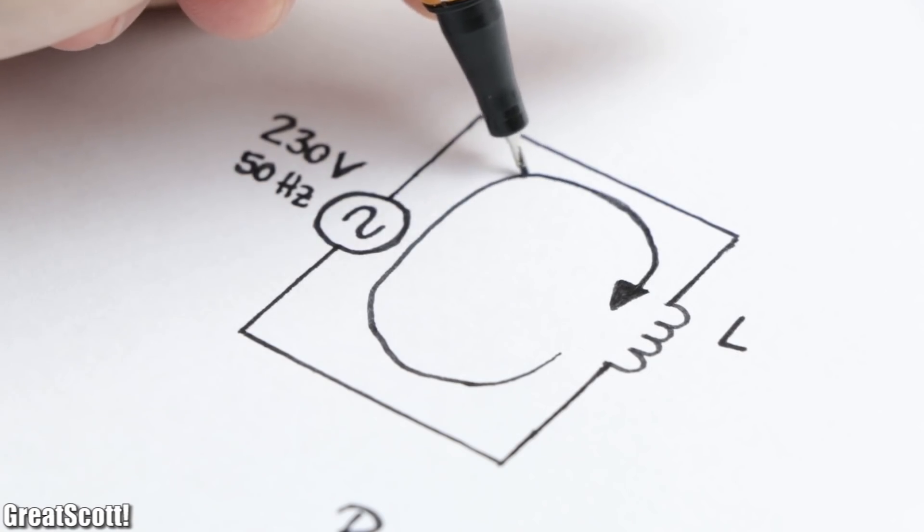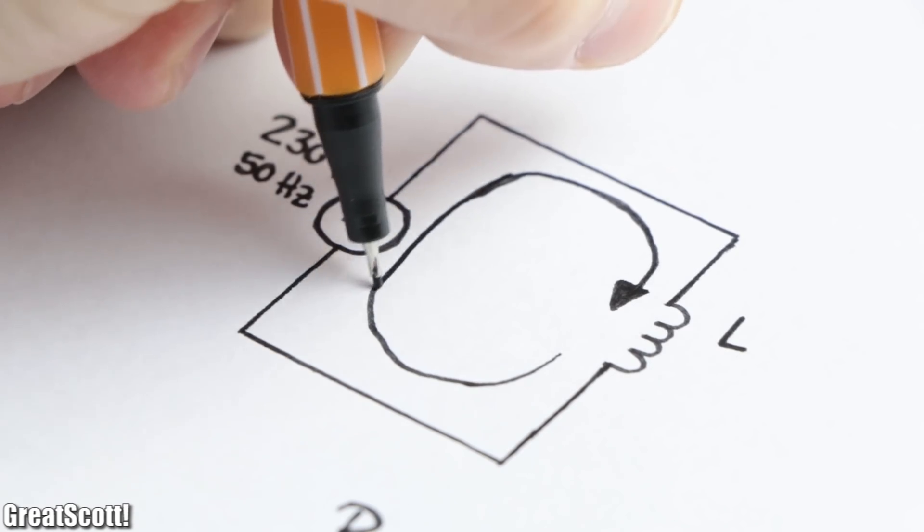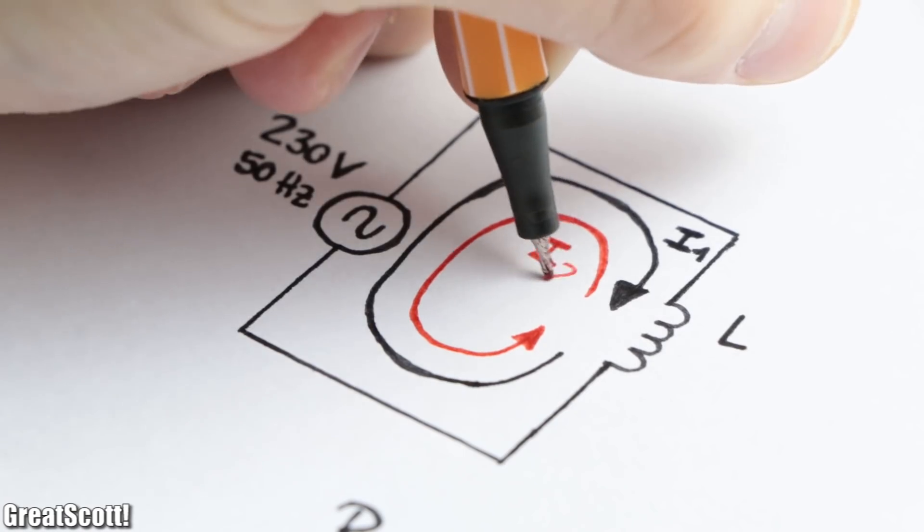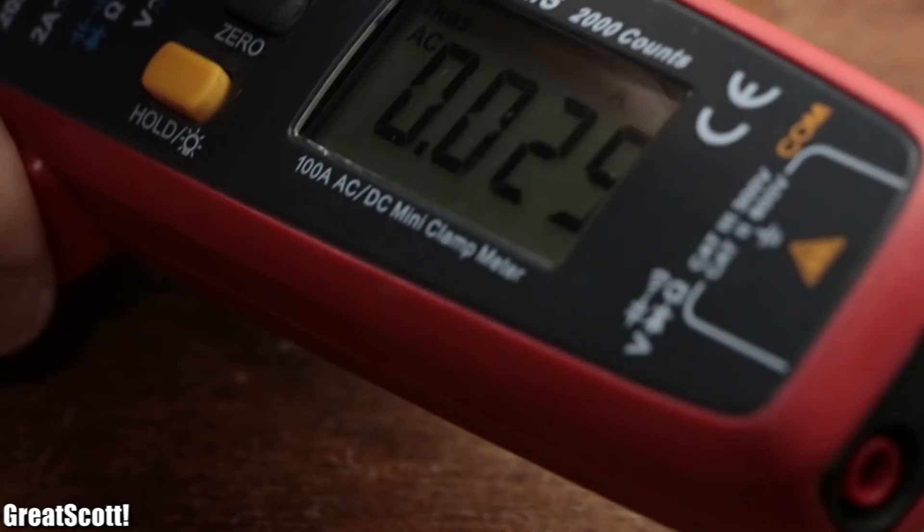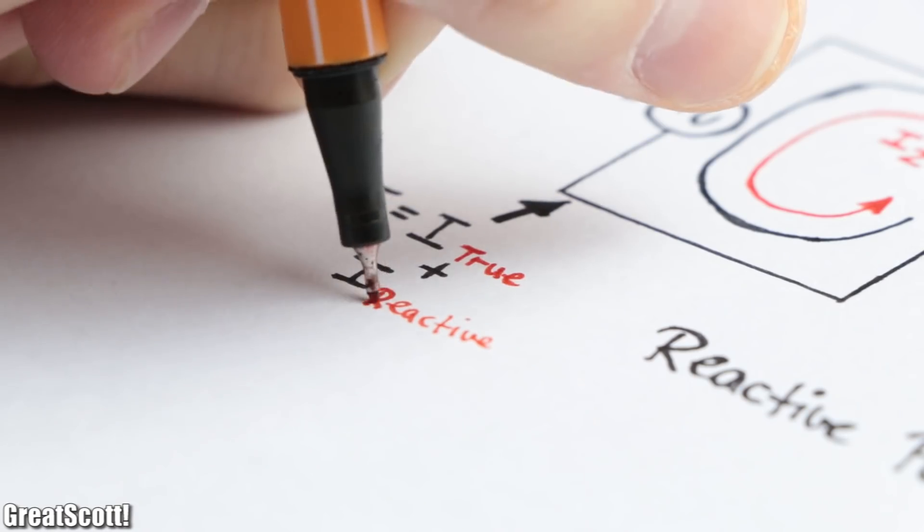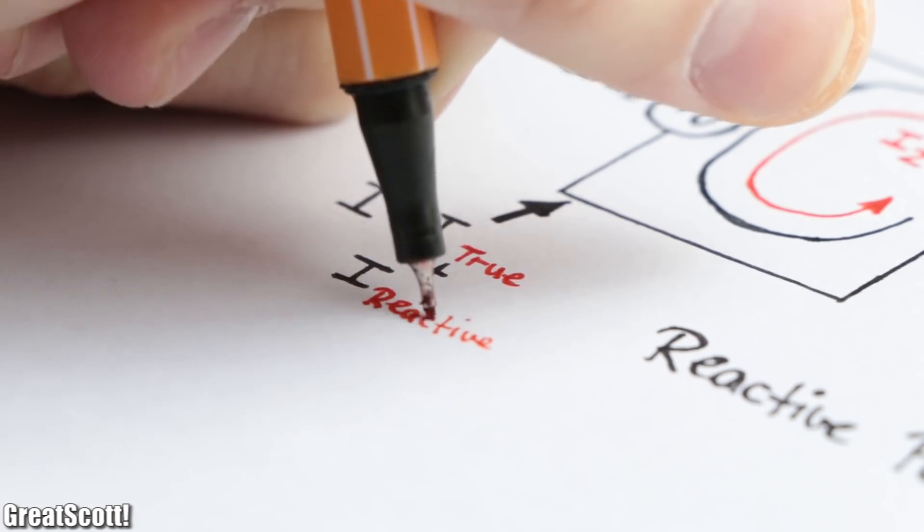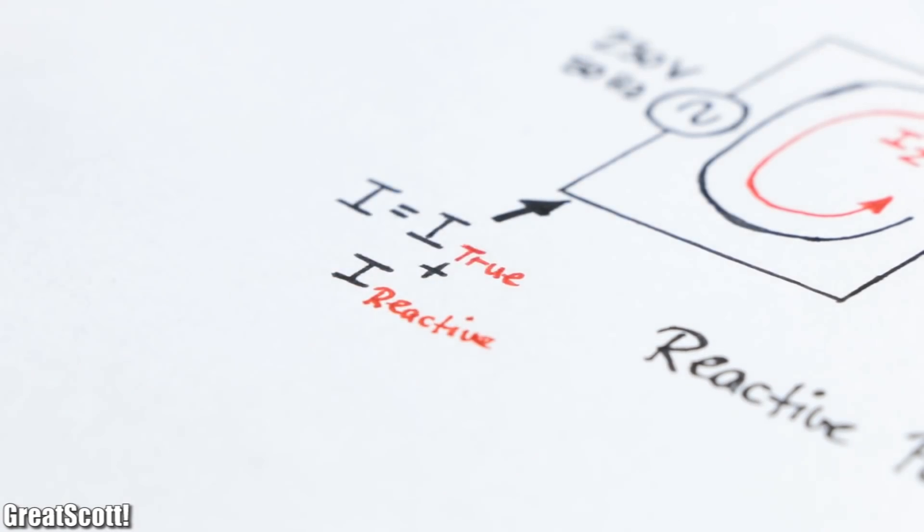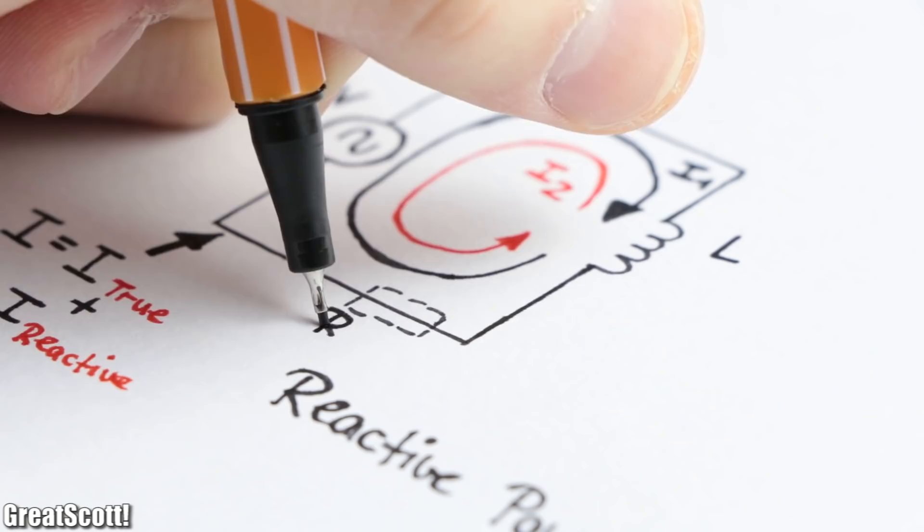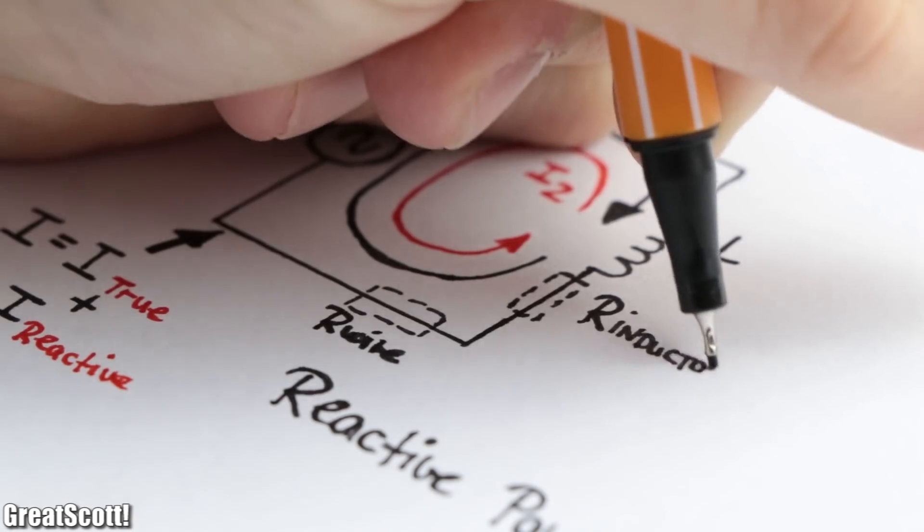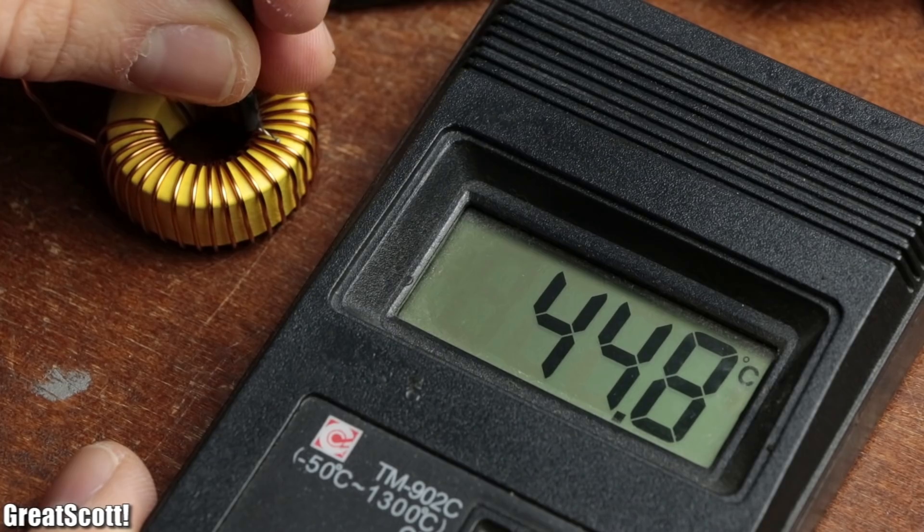At this point you might be asking yourself, if this power simply creates an oscillation and does not really waste power, why should I care about it? Well the reason is that current does flow nevertheless. Which means our wires not only need to be able to handle the true current but also the reactive current, which means they need to be thicker. And since a wire also features a small resistance as well as a few other components, even reactive current does create a small power loss.